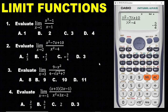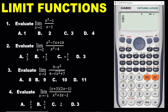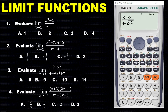Now the next question: evaluate the limit of nine minus x squared, all over x minus the square root of x squared plus seven. Enter this as a fraction. On top, enter 9 minus x squared. Go down and enter the denominator: x minus the square root of x squared plus seven.